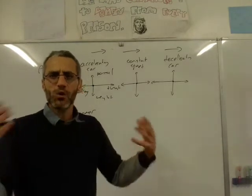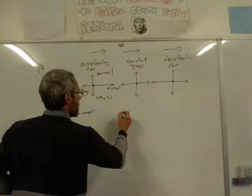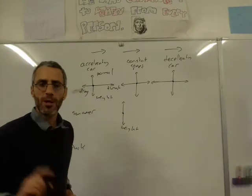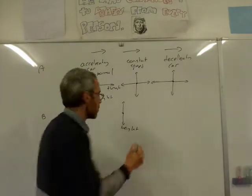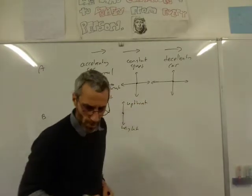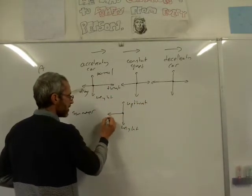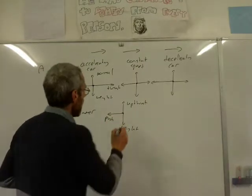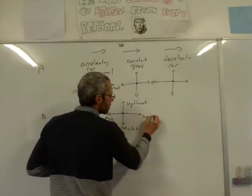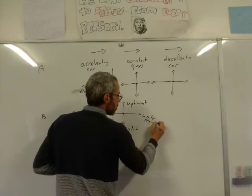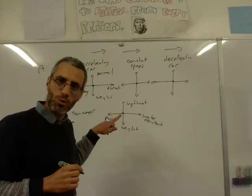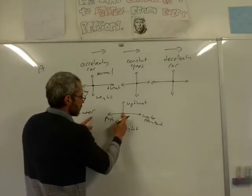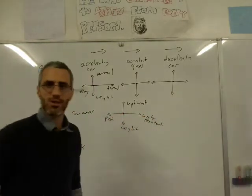For the swimmer moving at constant speed: we have his weight downward, and buoyancy — which we call upthrust — pushing him up. The swimmer is moving to the left, so we have a push force forward and a backward force called water resistance. Because he's at constant speed, these forces must be equal. If he were accelerating, the push force would be bigger; if slowing down, the water resistance would be bigger.